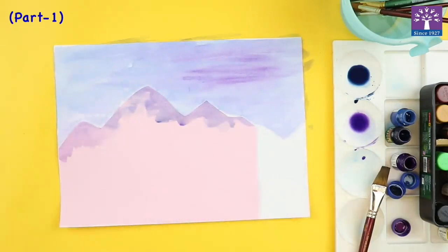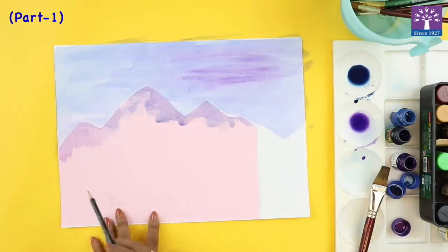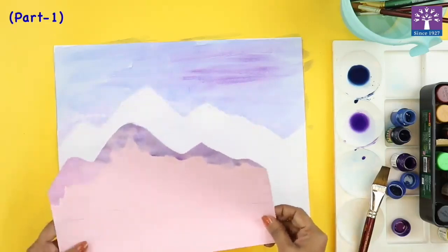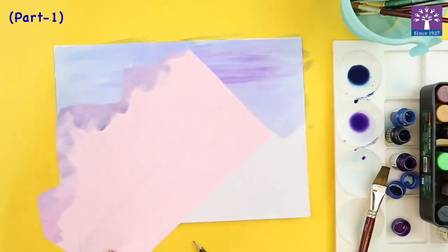What we will do is draw an uneven line again. We are creating another stencil. Just draw an uneven line like this and cut the paper. We are using the same trick.